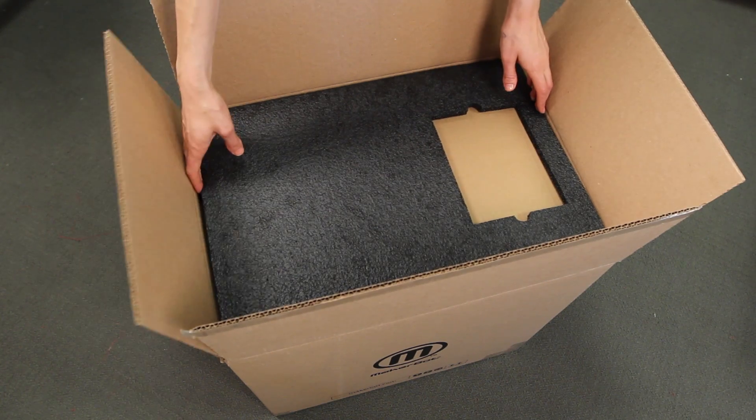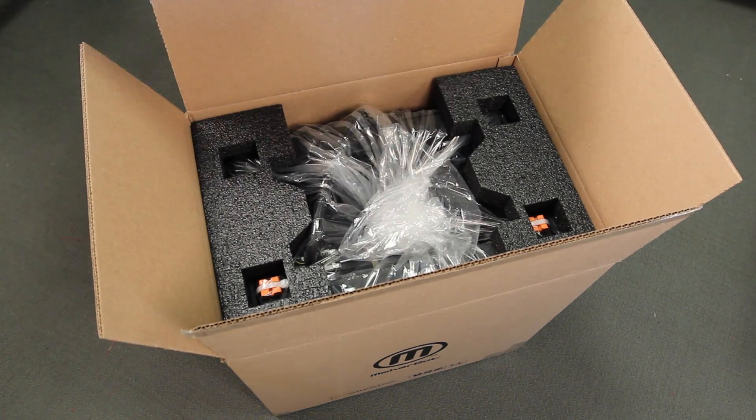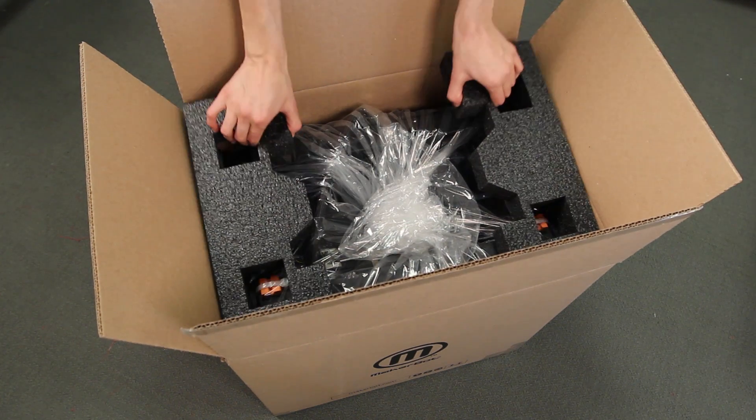Now remove the layer of foam and the sheet of cardboard underneath, as well as the two protective foam pieces from the sides of the MakerBot Replicator 2X.